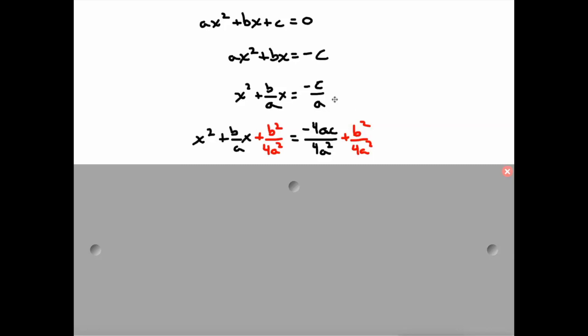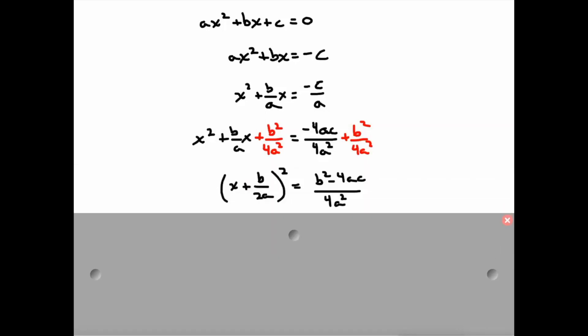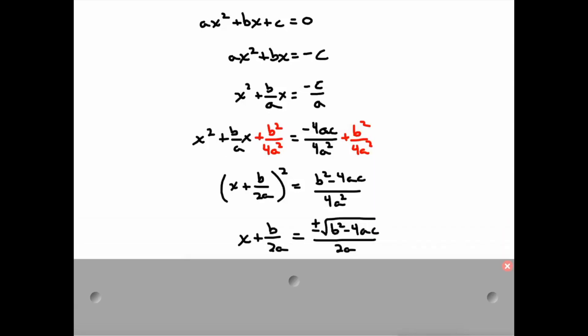So I added that to both sides. I also took this negative c over a, and I multiplied it by 4a, so I can get a common denominator on the bottom, because I'm going to combine those two fractions. That's what I did on the right. I combined these two fractions to b² - 4ac all over 4a². On the left, I took this perfect square trinomial that I created, and I factored it.